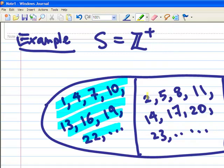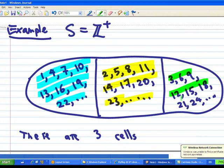And the second one is 2, 5, 8, 11, 14, 17, 20, and 23 and so on. And the third one is 3, 6, 9, 12, 15, 18, 21, and 24 and so on.